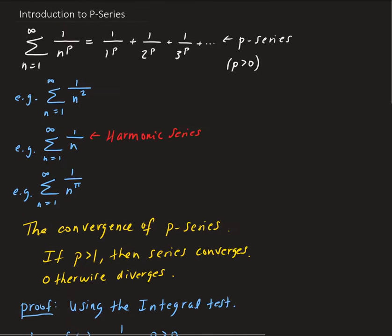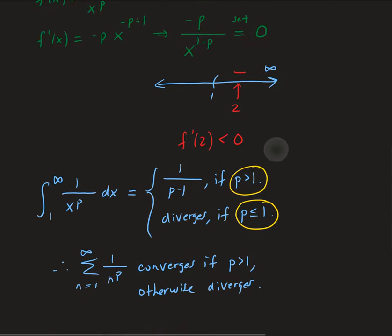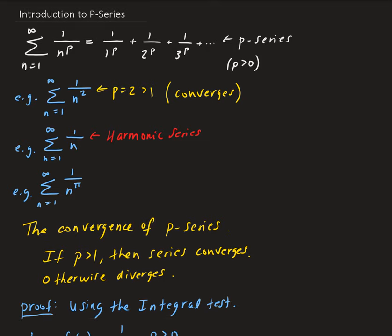Going back to our examples: for p equals 2, since p is bigger than 1, that series converges. For the harmonic series where p equals 1, it diverges. For the series with p equals pi, since 2π is bigger than 1, that series converges. So that's the introduction to the p series.